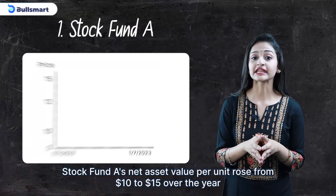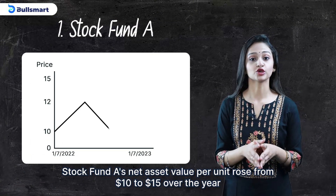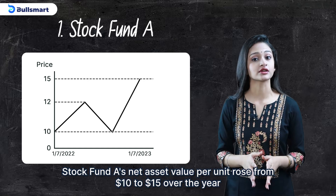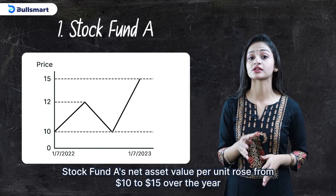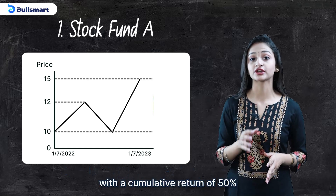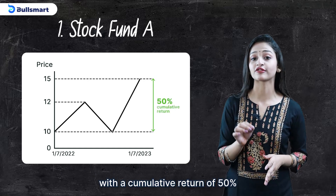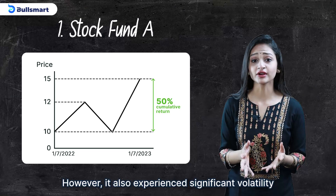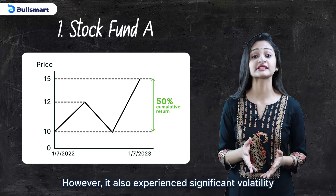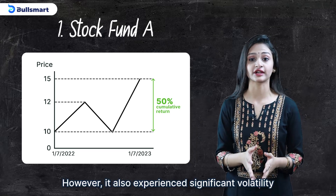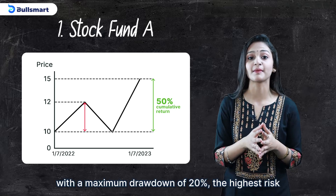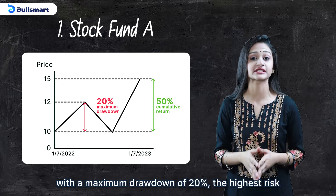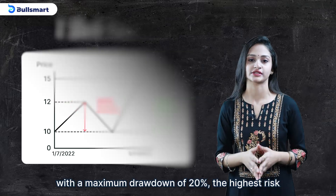From the chart we can see: Stock fund A's net value per unit rose from $10 to $15 over the year with a cumulative return of 50%, the best performance. However, it also experienced significant volatility with a maximum drawdown of 20%, the highest risk.